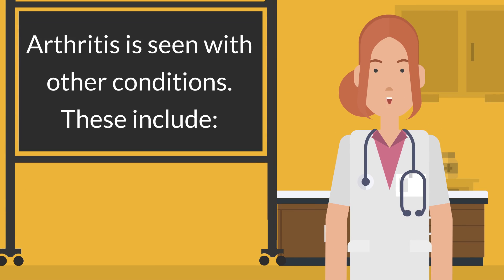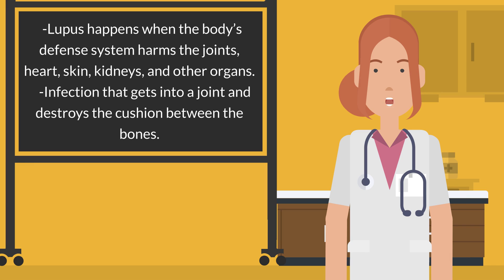Arthritis is also seen with other conditions. These include lupus, which happens when the body's defense system harms the joints, heart, skin, kidneys, and other organs. Another associated condition is infection that gets into a joint and destroys the cushion between the bones.